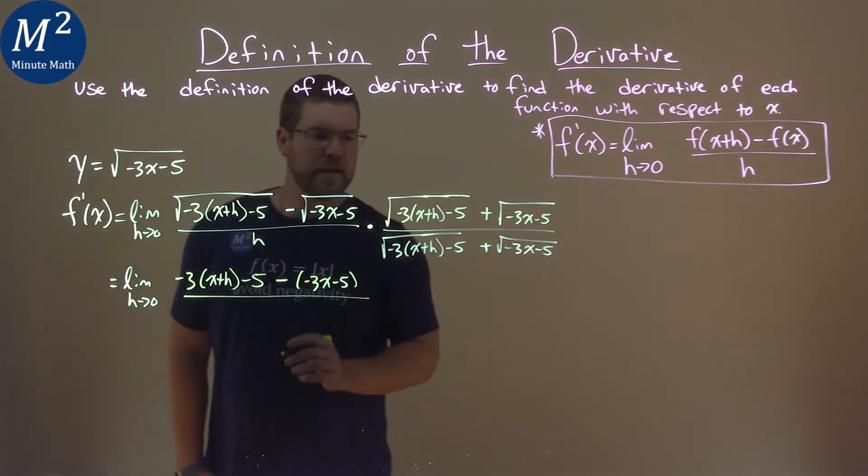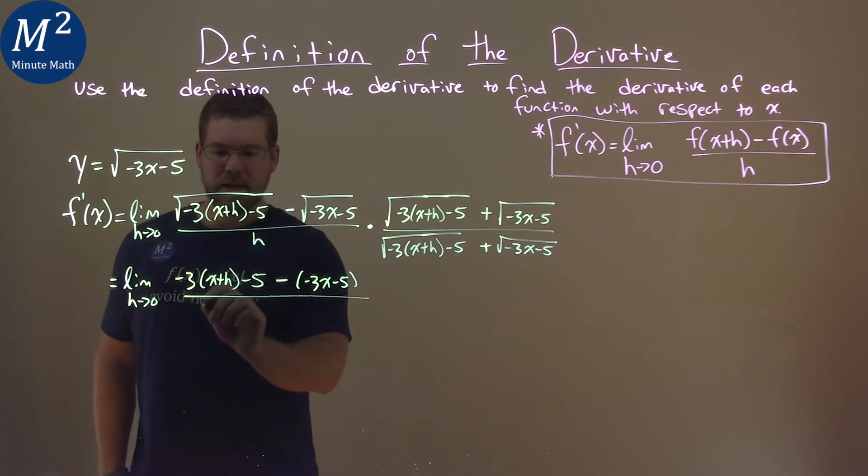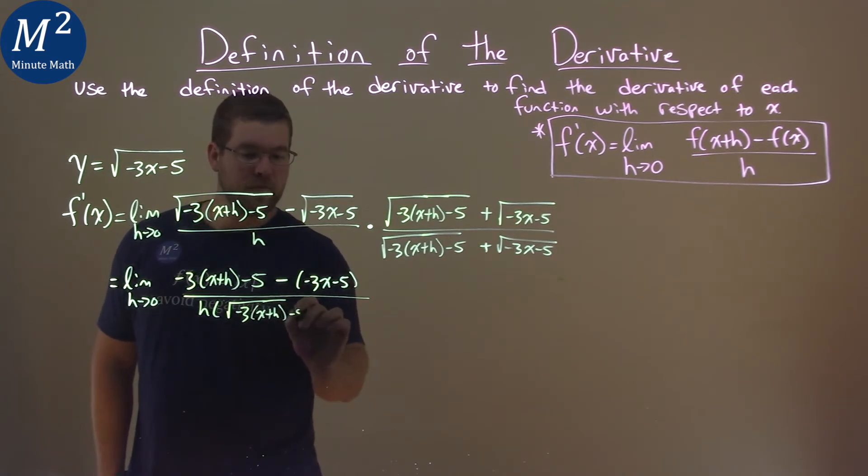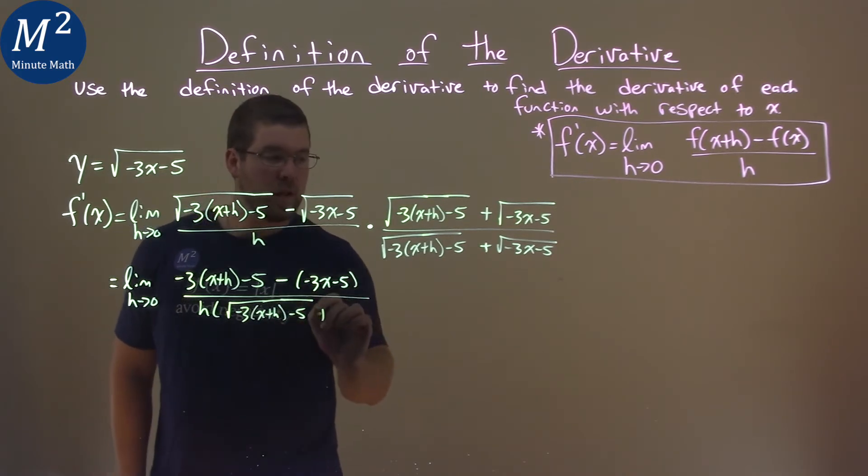Denominator is a little tricky, and I'm going to actually keep it separate. I'm going to put the h out here, and we have the square root of negative 3 times x plus h minus 5 plus the square root of negative 3x minus 5.